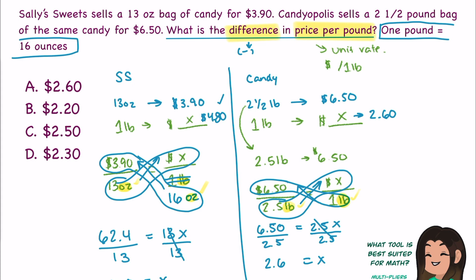Now, Candyopolis was selling a 2.5-pound bag for $6.50. I wanted to know what one pound of that was going to cost. One pound is less than 2.5 pounds, so it should cost less, and that's what we end up. $2.60 is less than $6.50. I have my prices per pound for each store. Now, all I'm going to do is just some subtraction. I'm going to take the $4.80 and subtract the $2.60, and I get a total of $2.20. So the difference in price per pound from these two candy stores is answer choice B, $2.20.